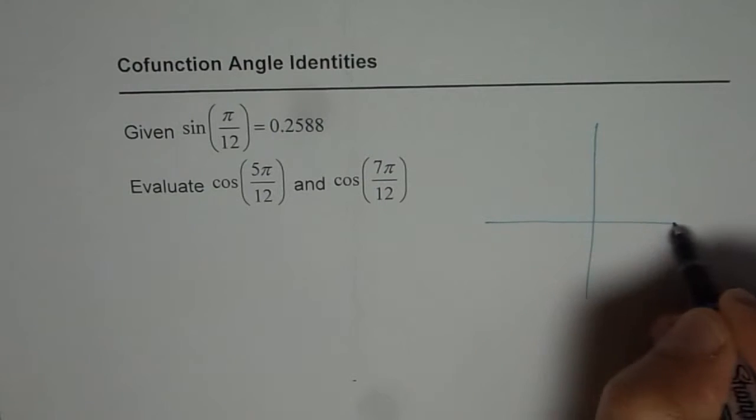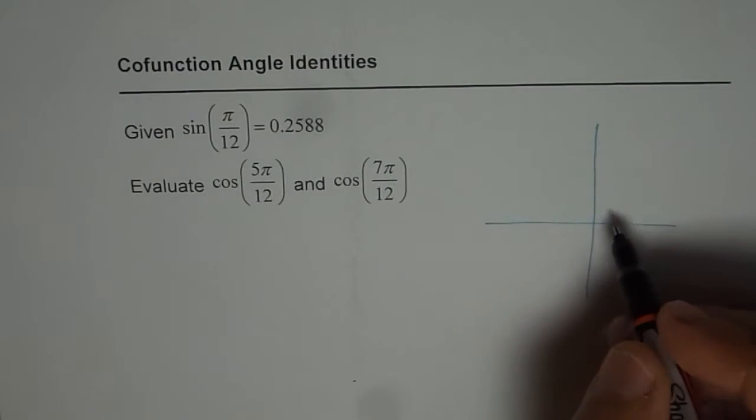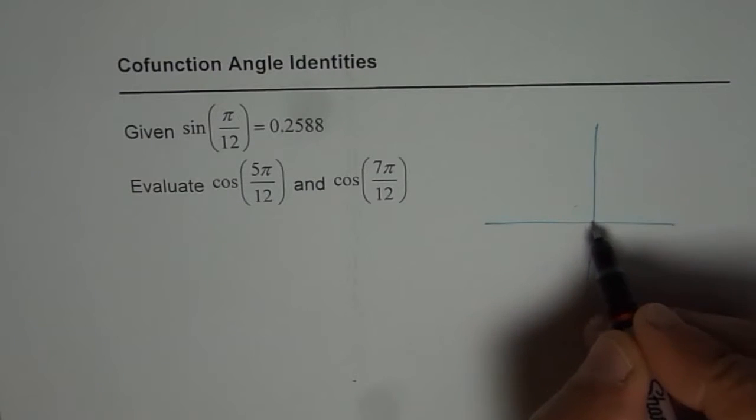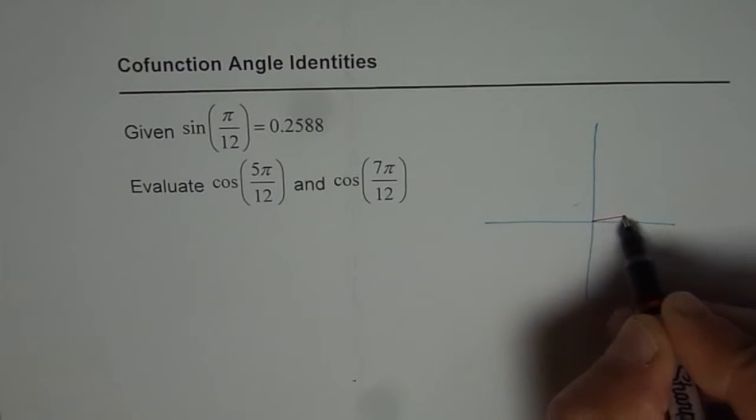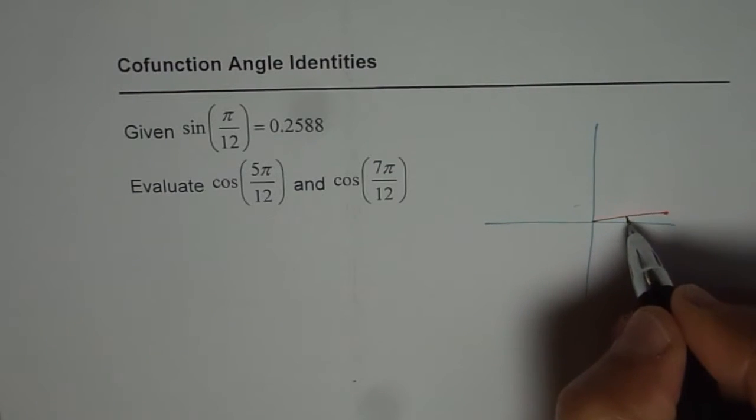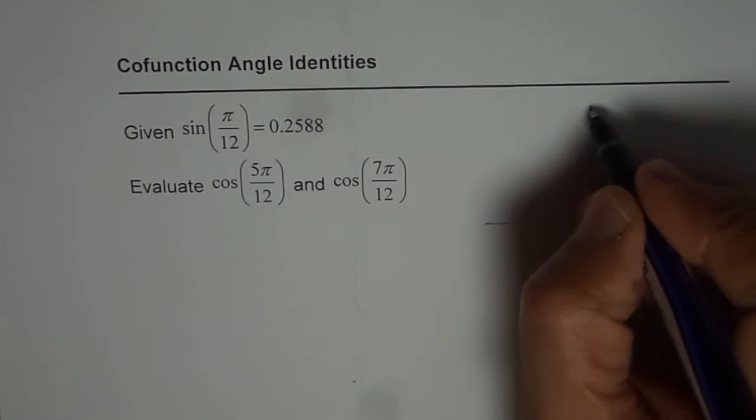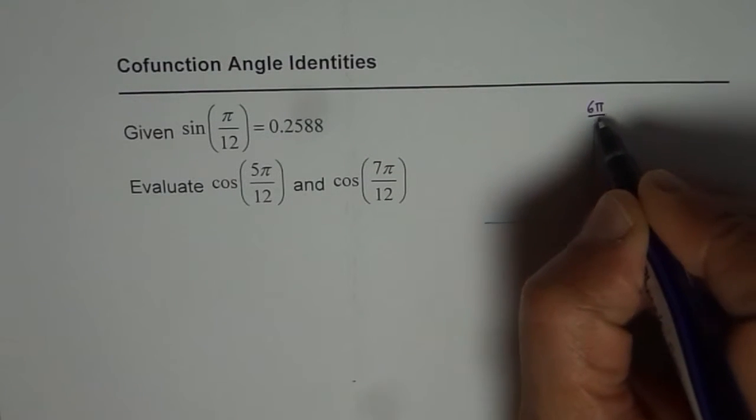Let us try to understand the question. What we are really given is 7π/12, that means dividing this π into 12 equal parts. We are given this position and let us say this angle is π/12 for us. Now 5π/12 and 7π/12 means this is going to be 6π/12.